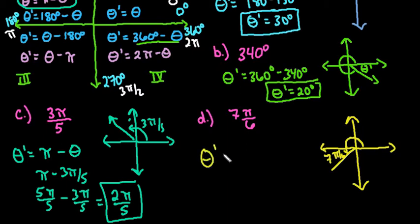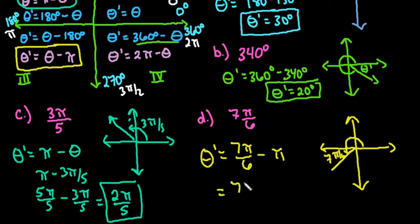So if we want to find theta prime, this time we're going to take 7 pi over 6, and we're going to subtract pi. So I'm using this rule this time to figure out what is left over between those two, and again, if you just think about this in terms of fractions, one whole rotation is the same thing as 6 pi divided by 6, so we would end up with pi over 6 as our reference angle.